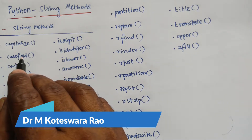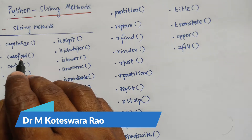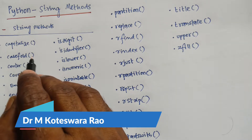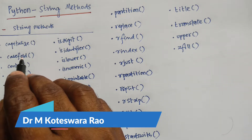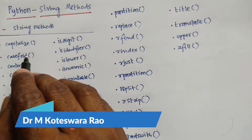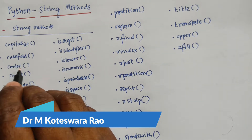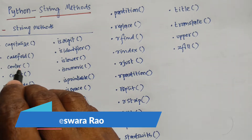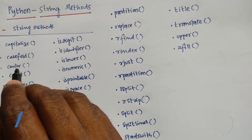The second one is casefold, which converts a string into lowercase. The third one is center, which returns a centered string.